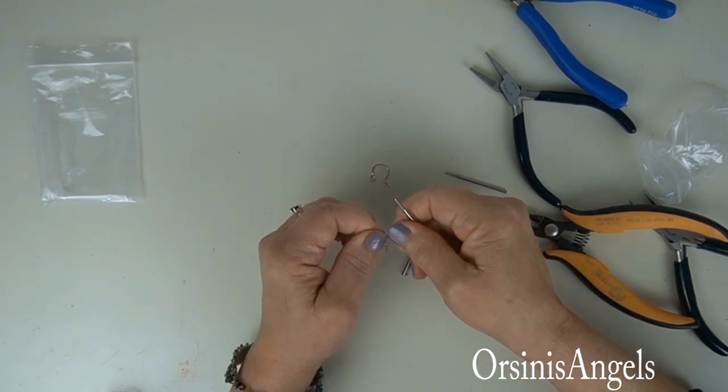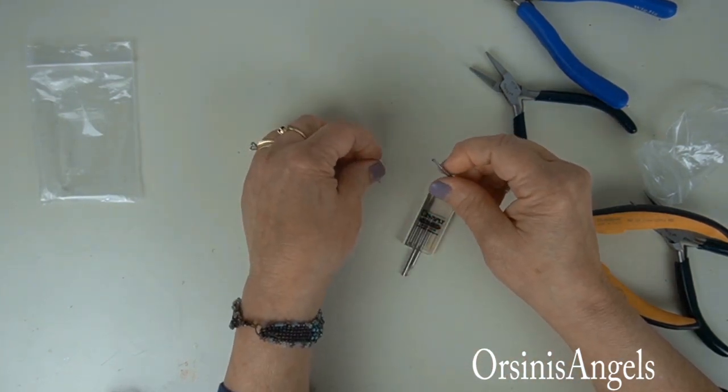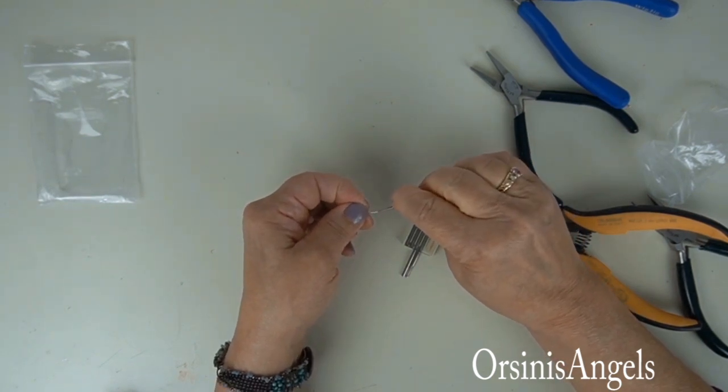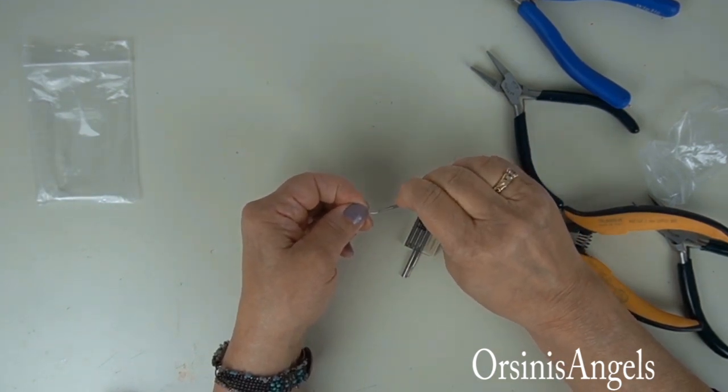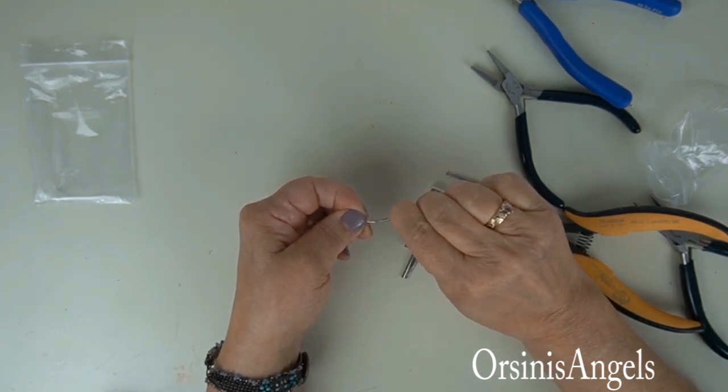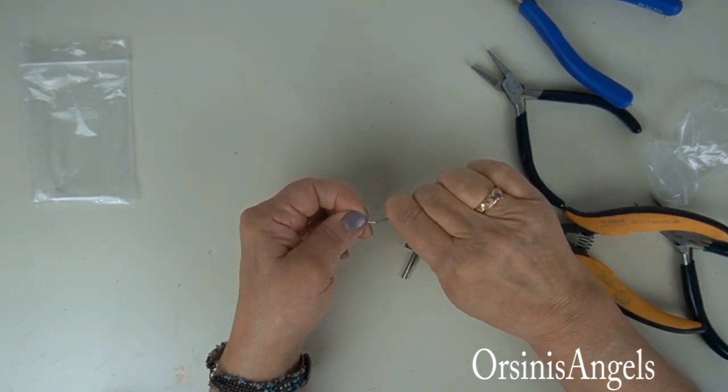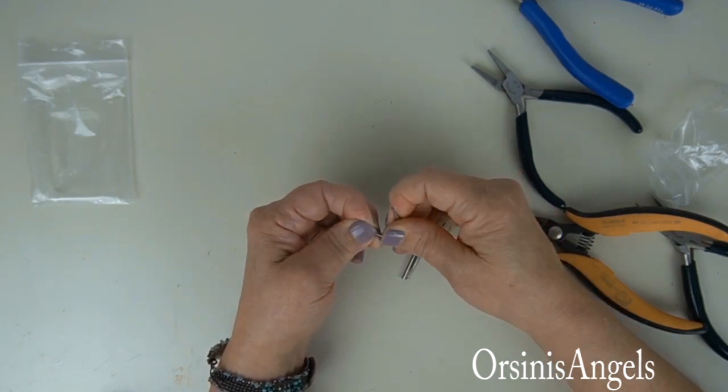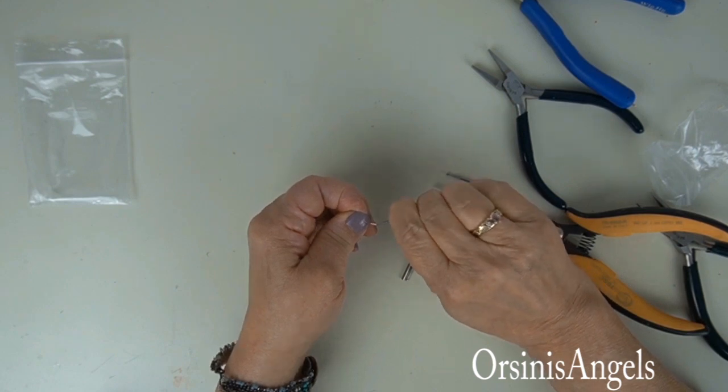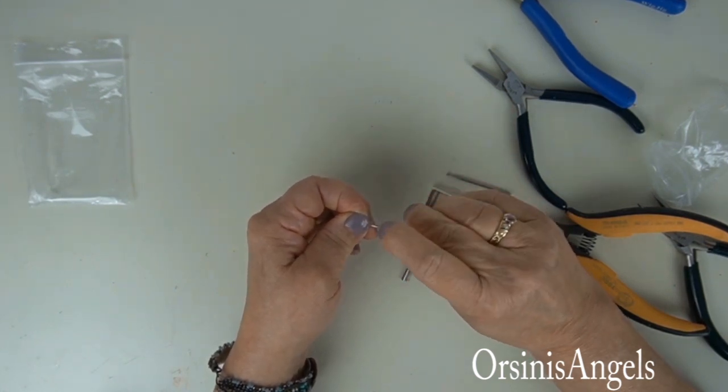There. Just do it for the other one. You just kind of roll it back and forth until you don't feel any rough edges. It just kind of sands it down.